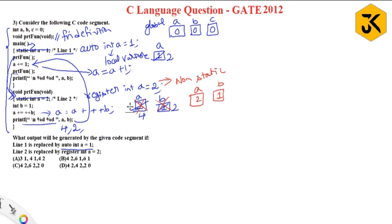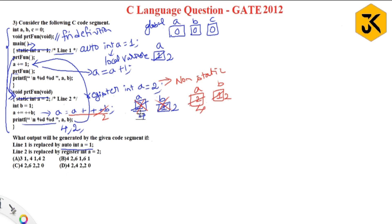Since the register variable is non-static, memory is recreated with a = 2 and b = 1. Then a = a++ + b: ++b increments b to 2, and a is already 2, so 2 + 2 = 4 again. The printf prints a and b, giving output 4, 2 once more.